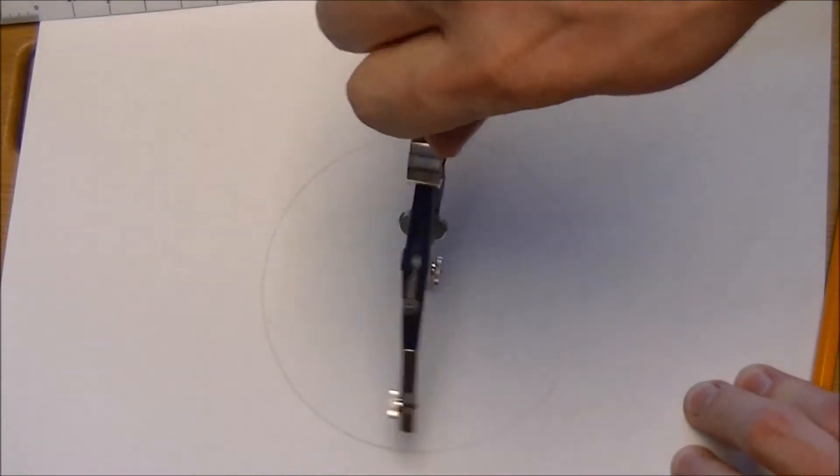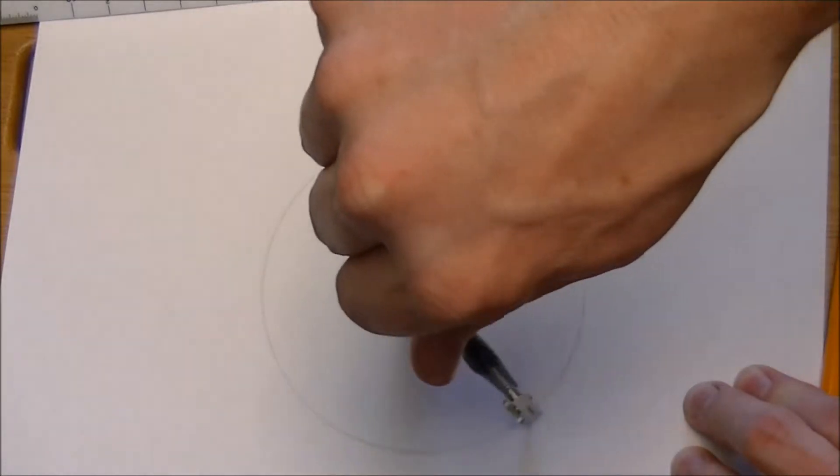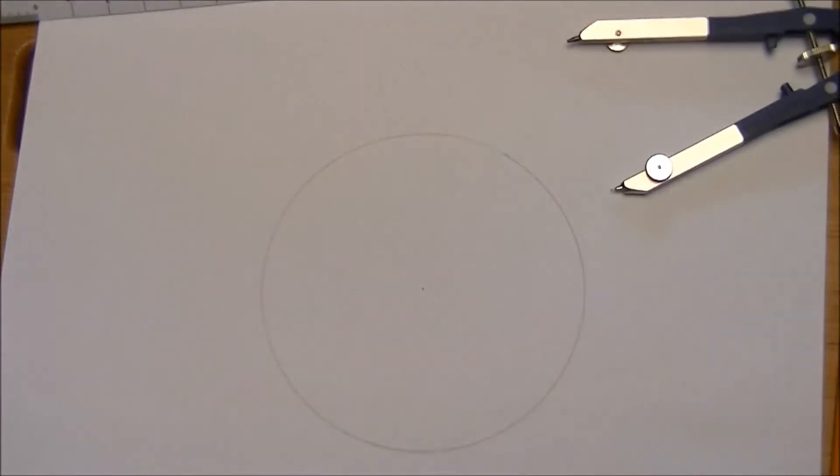Now, one of the great things about regular polygons that fit nicely inside of circles is that each side of the polygon is exactly the same length.